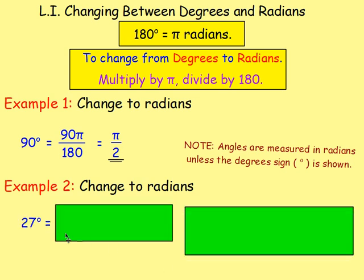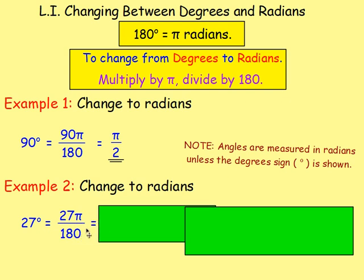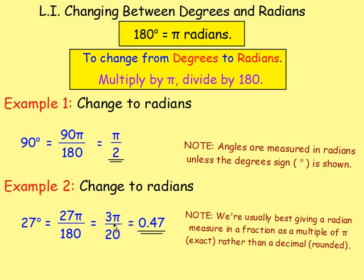Let's try another example. Change to radians. This time 27 degrees. So, you want to do the same thing. Multiply by π. Divide by 180. So, you're bringing in π. So, 27π and then put it over 180. Again, try simplifying that as far as you can. Both 27 and 180 will divide by 9. So, dividing them by 9 gives you 3 over 20. So, we'd have 3π over 20. That doesn't simplify anymore. So, you would leave it as 3π over 20. What you could also do though, is on your calculator, you could do 3 times 3.14, that's just π, and then divide by 20. And you'd end up with 0.47. What you tend to do though, is you tend to leave it written with π. And you write it as a fraction. So, it's usually best to give a radian measure in a fraction as a multiple of π, rather than as a decimal. You're normally wanting the exact value. This is rounded. This is exact.